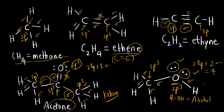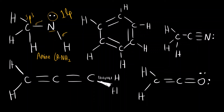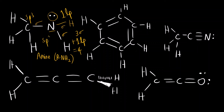For a primary amine (RNH₂), the carbon is again sp3. The lone pair on nitrogen is not involved in resonance, so we count it: one lone pair plus three sigma bonds (two N–H and one N–C) gives four total — nitrogen in an amine is sp3 hybridized.